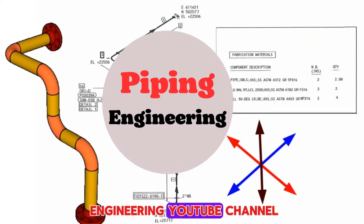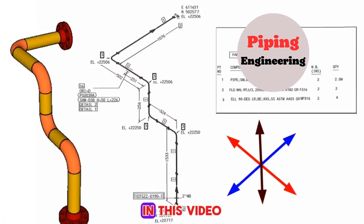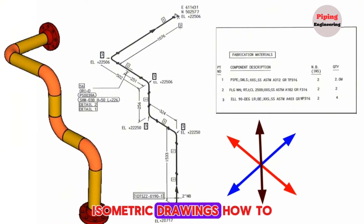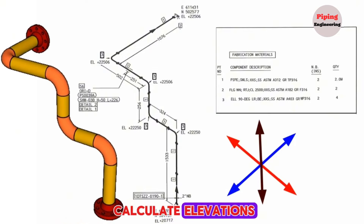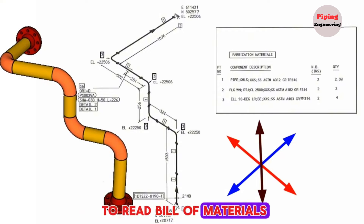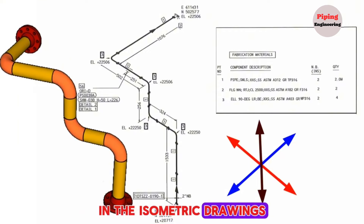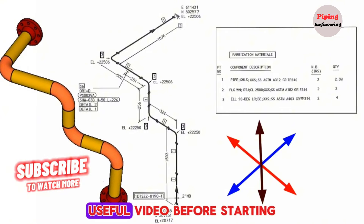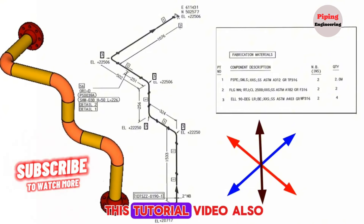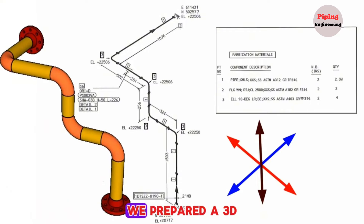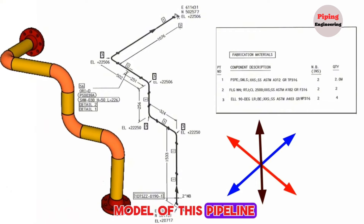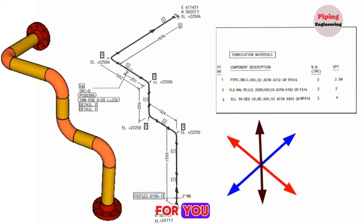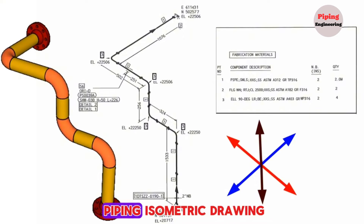Welcome to our Piping Engineering YouTube channel. In this video, we'll be showing you how to read piping isometric drawings, how to calculate elevations, north and east points, and how to read the bill of materials in the isometric drawings. Please subscribe to our channel to watch more useful videos. We have also prepared a 3D model of this pipeline alongside the pipe drawing for easy reading and understanding of piping isometric drawings.